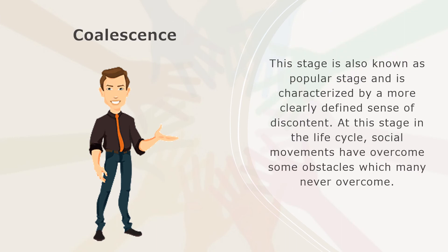Coalescence, also known as the popular stage, is characterized by a more clearly defined sense of discontent. At this stage in the life cycle, social movements have overcome some obstacles which many never overcome. Social unrest or discontent passes without any organizing or widespread mobilization. It is no longer just a general sense of unease but now a sense of what the unease is about and who or what is responsible.